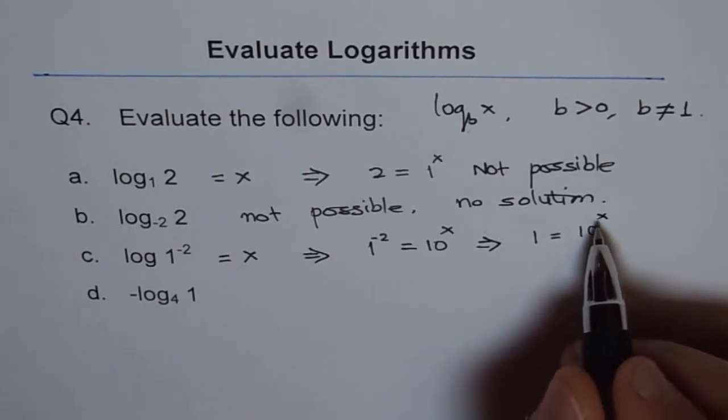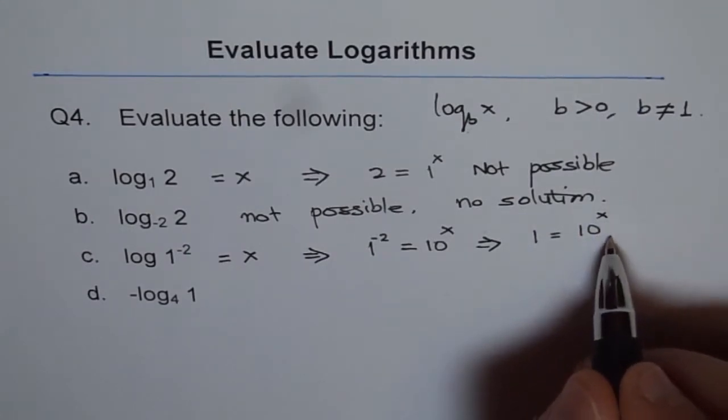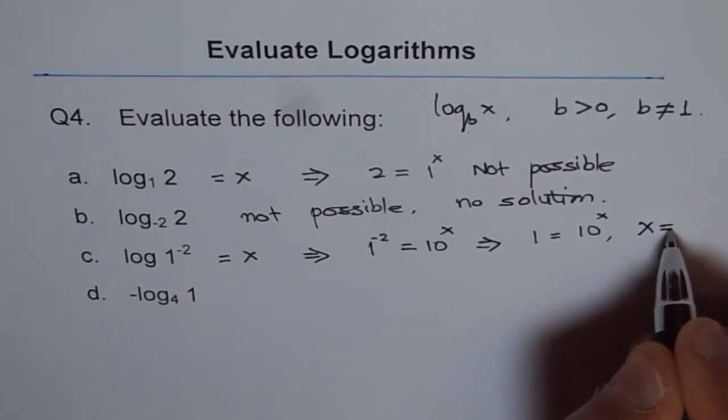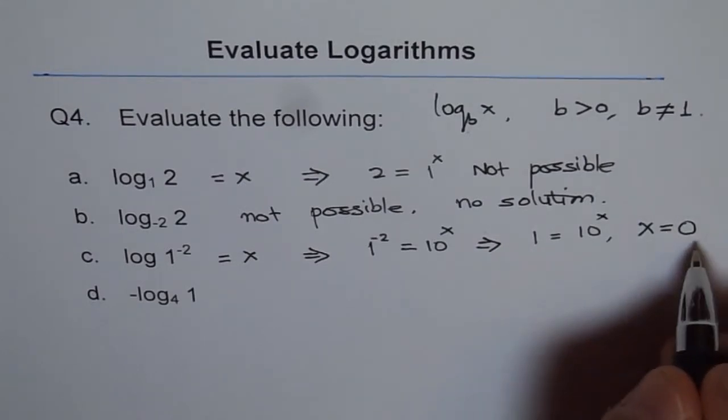Now, if I want 10 to the power of x to be 1, then x has to be 0. So this implies x equals to 0.